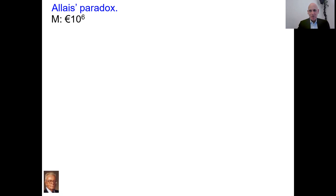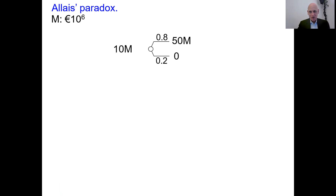In notation, M denotes a million euro. Imagine a choice situation. You can choose between the left option — 10 million for sure — or the right option, which is a lottery: a probability distribution over money with 0.8 probability of 50 million and nothing otherwise. In this situation, what would you choose? Please make up your mind, pause the video, and when you've decided what you think is best for you, come back.